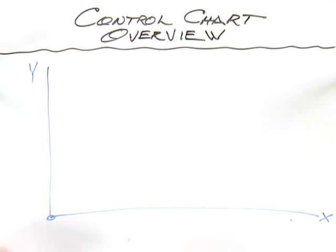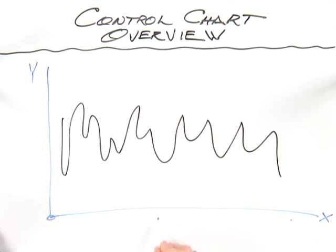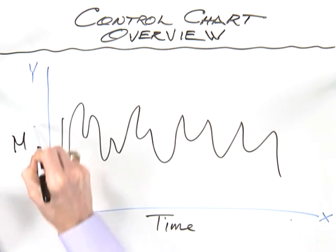Let's now take a look at how we actually analyze and interpret a control chart. You'll remember we had our data plotted over time. Time is on the horizontal axis and our measure of interest is on the vertical.